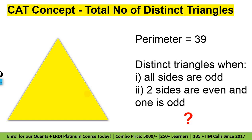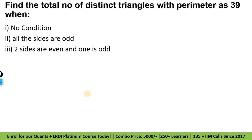Toh chalo guys start karte hain. So guys, yahaan pe concept hai — total number of distinct triangles nikalna hai jab perimeter 39 diya hai. Pehli condition: koi condition nahi, normally bola gaya total number of distinct triangles when perimeter is 39. Doosari condition: all sides odd — sides triangle ki odd hon toh kya hoga, total number of distinct triangles.